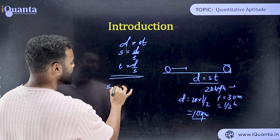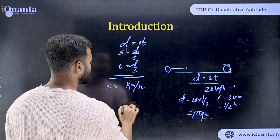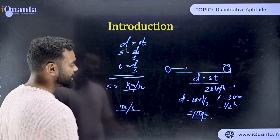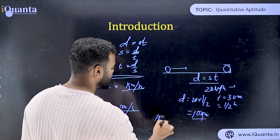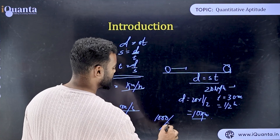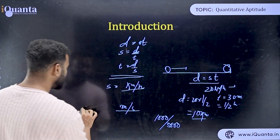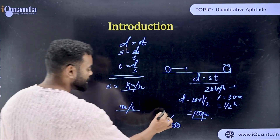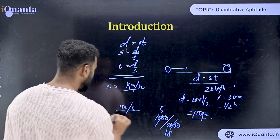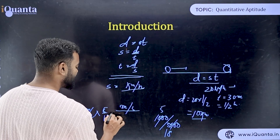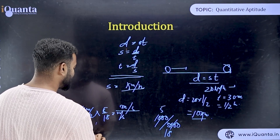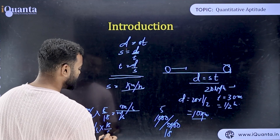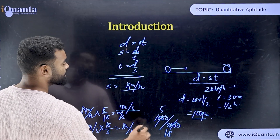Speed is generally expressed in km/h or m/s. To convert km/h to m/s, multiply by 5/18, since 1 km = 1000 m and 1 hour = 3600 seconds. To convert m/s back to km/h, multiply by 18/5. Please remember these conversions.